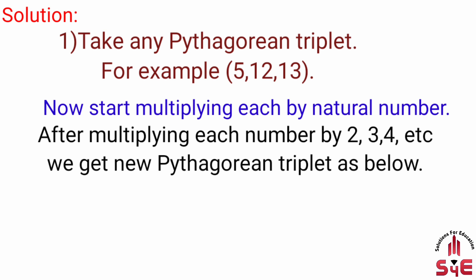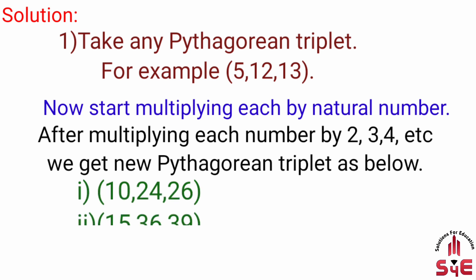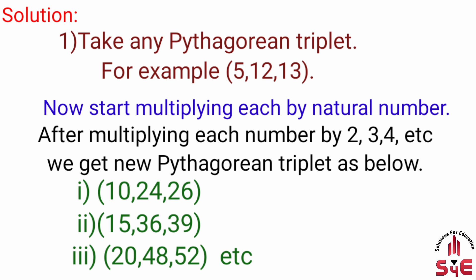5, 12, 13 को 2 से multiply करने पर new Pythagorean triplet 10, 24, 26 मिलता है; 3 से multiply करने पर 15, 36, 39 ये triplet मिलता है; और 4 से multiply करने पर 20, 48, 52 ये Pythagorean triplet हासिल होता है। इस तरह से किसी भी Pythagorean triplet को natural numbers से multiply करके बहुत सारे Pythagorean triplets बना सकते हैं।